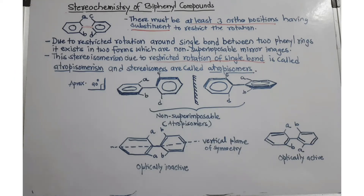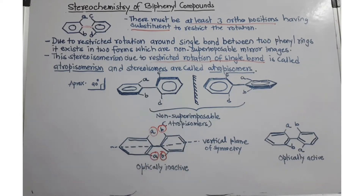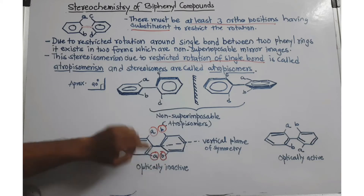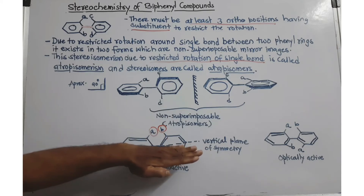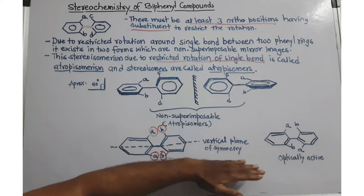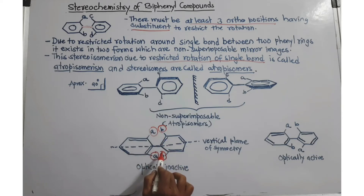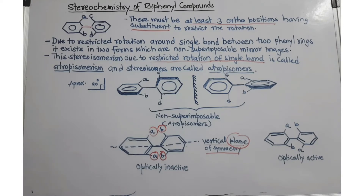Here is an important example. Although four substituents are present at the ortho positions, you can cut this molecule into two equal halves — this half is a mirror image of the other half. That means the molecule can be cut into two equal halves by a vertical plane, so this molecule has a vertical plane of symmetry. Therefore, there should not be similar groups or atoms attached at the ortho positions; if similar groups are attached, the molecule has a vertical plane of symmetry and cannot show optical activity.